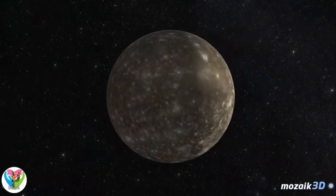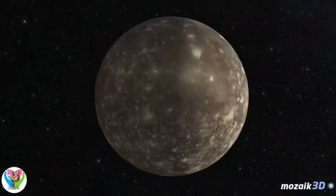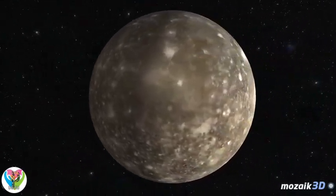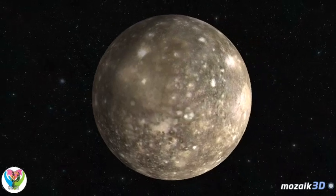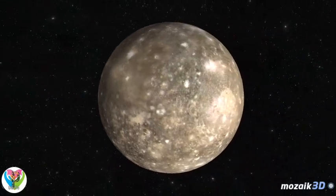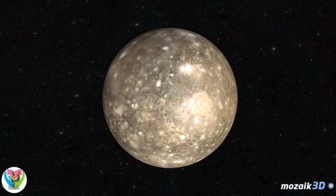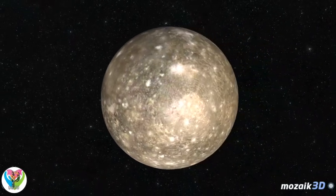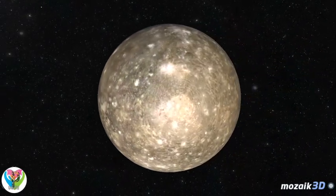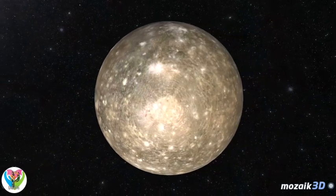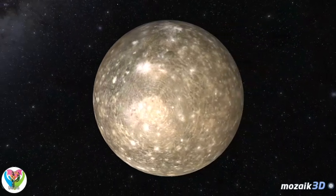There are no distinct layers inside Callisto. According to data provided by the Galileo space probe, it consists of ice, 40%, as well as rock and iron, 60%. Callisto's surface is the oldest in the solar system. It has not changed much in the past 4 billion years.